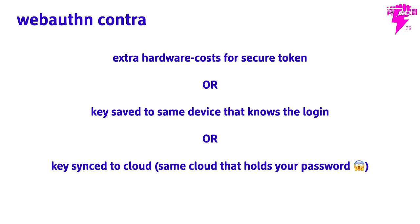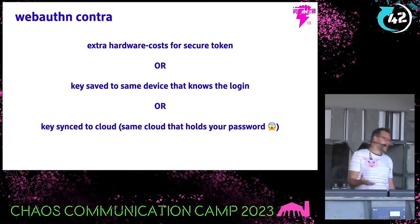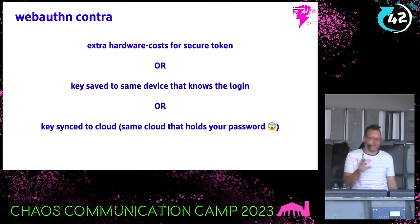On the contra side: if you use secure tokens you might have to spend a couple of euros - I think the cheapest ones are like 10-15 euros that fit the standard. If you want different devices - like using desktop for logging in and phone for the authentication device - you can do this through scanning QR codes on the desktop from your phone. For an enterprise or small company, you have to give everyone an extra YubiKey or extra phone so they can log in on the desktop if you don't want it on the same device - there might be extra costs.